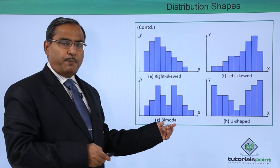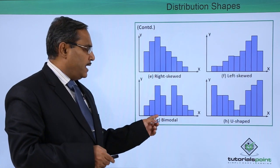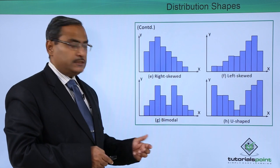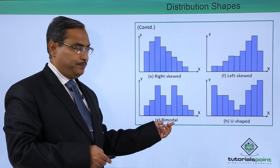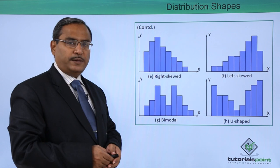And this is known as bimodal because there are two class intervals having the highest frequencies. And this sort of shape is known as U-shaped.